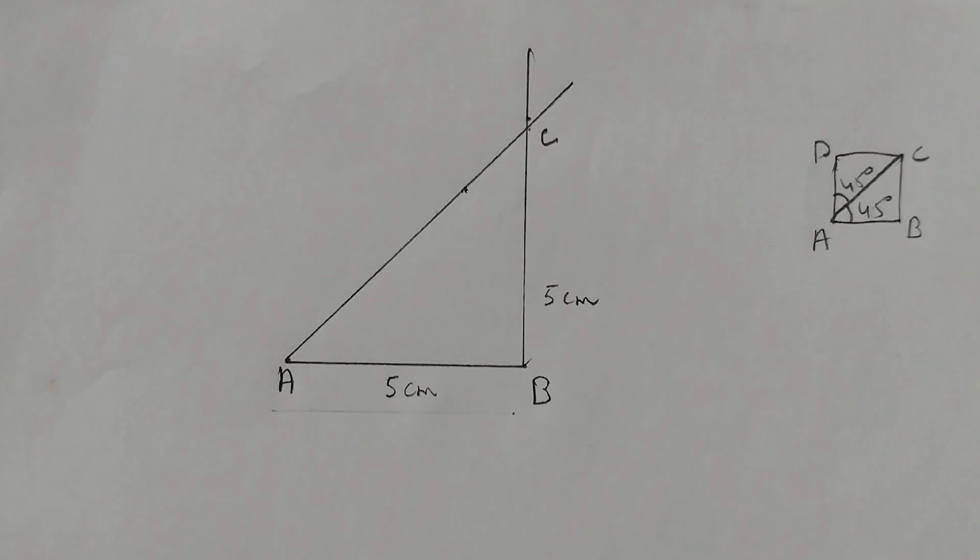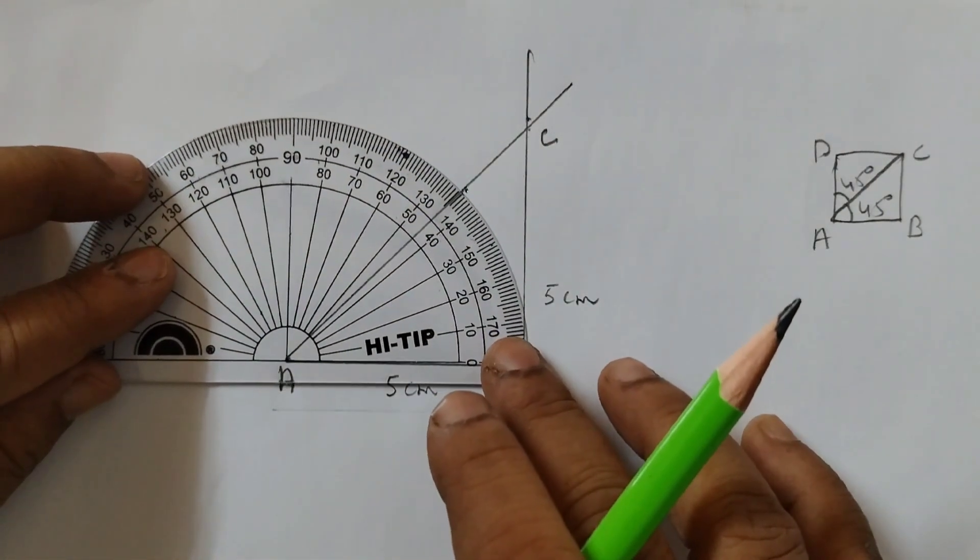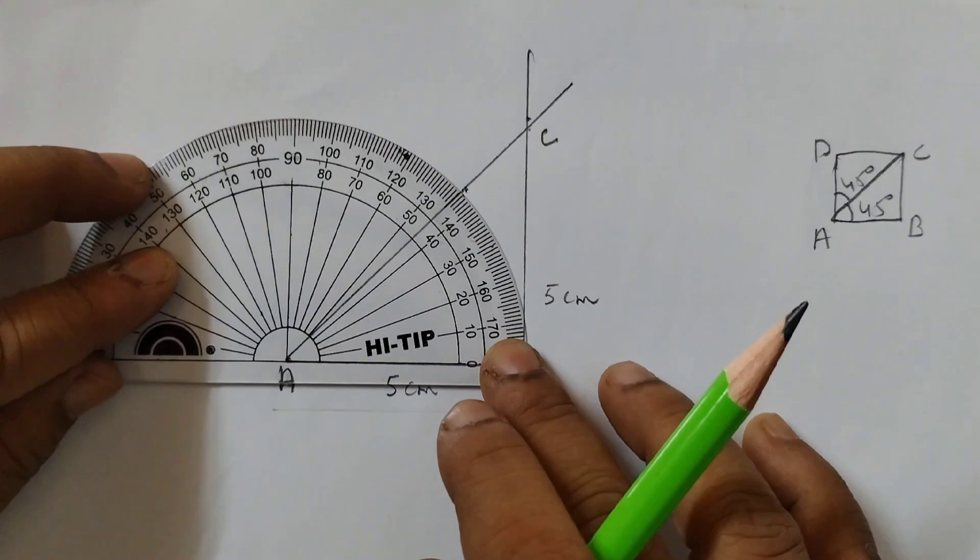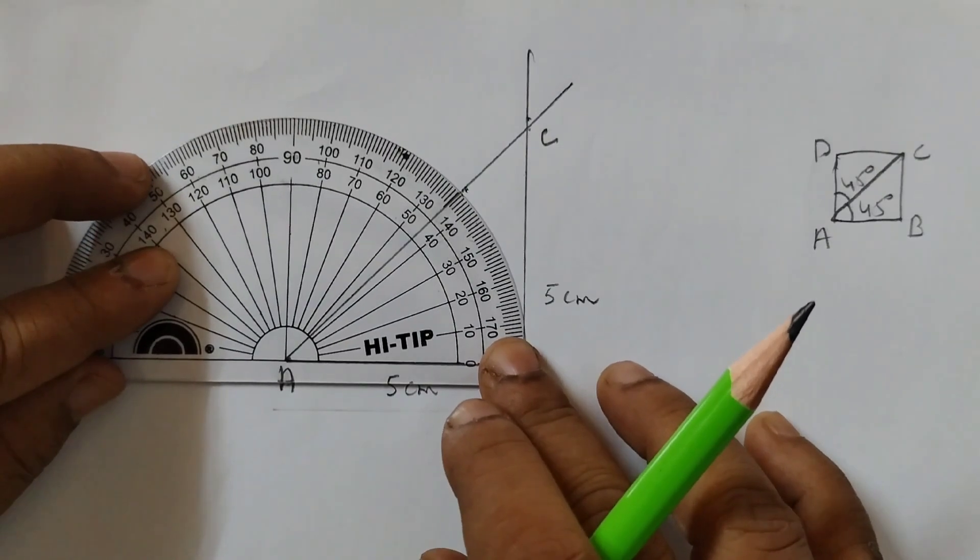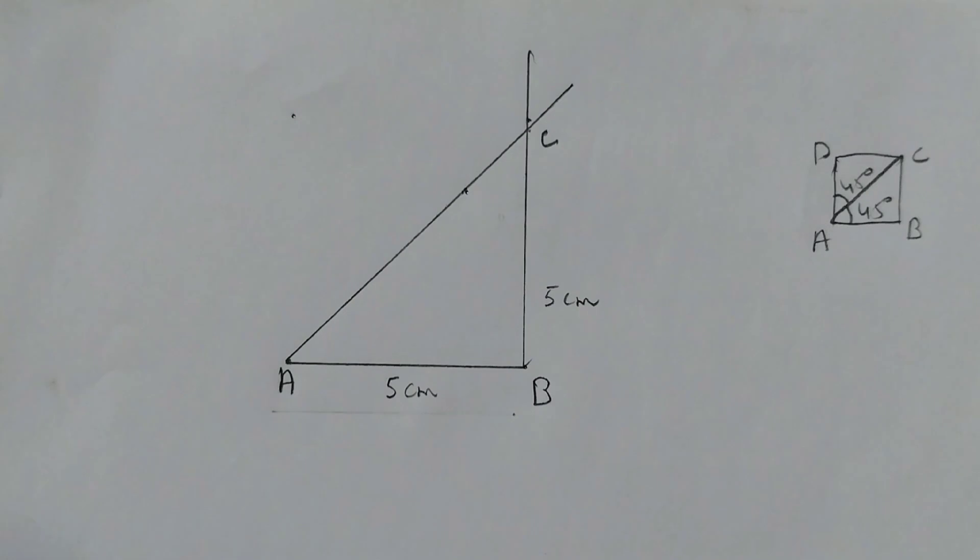Next we will draw a perpendicular at A. For that, place the protractor like this. 90 degrees marking. Now let us join the points.